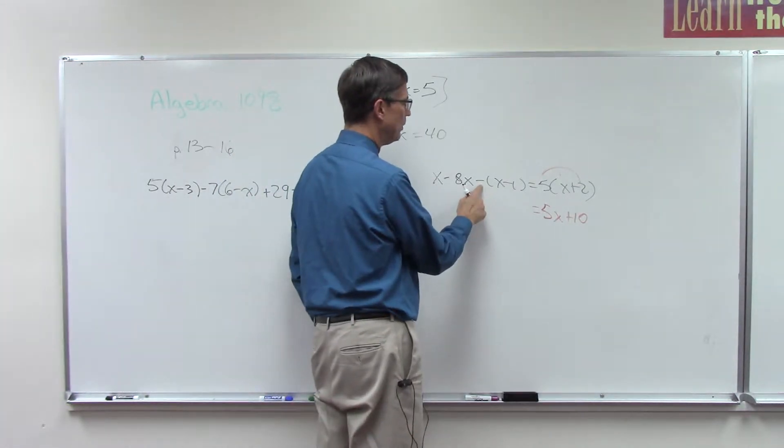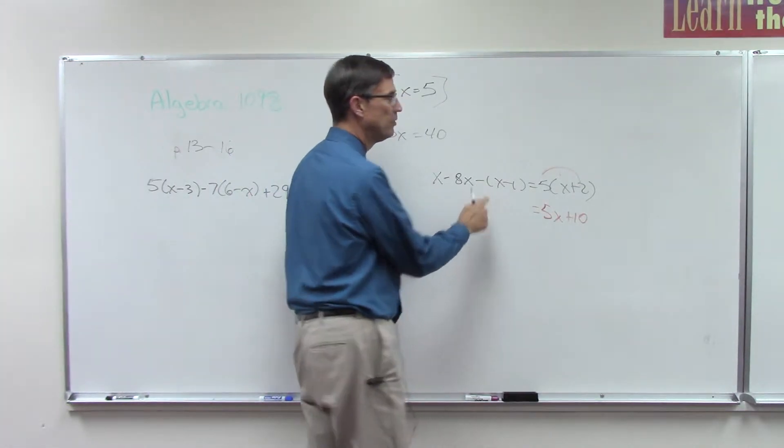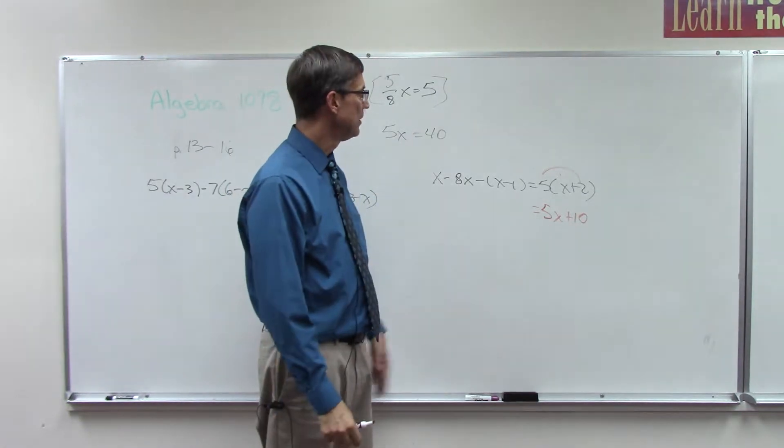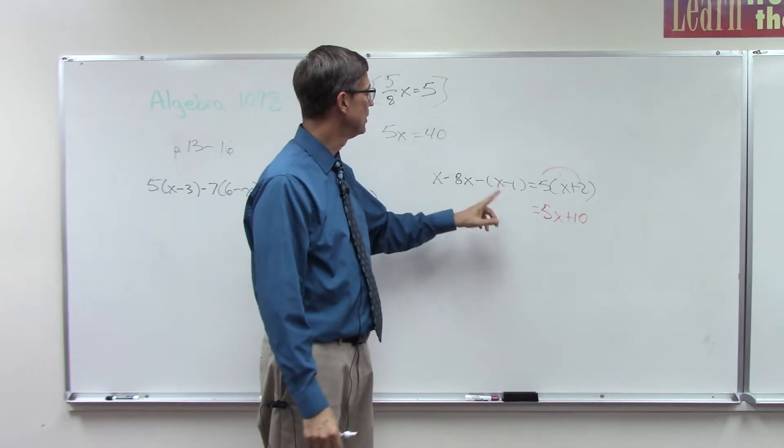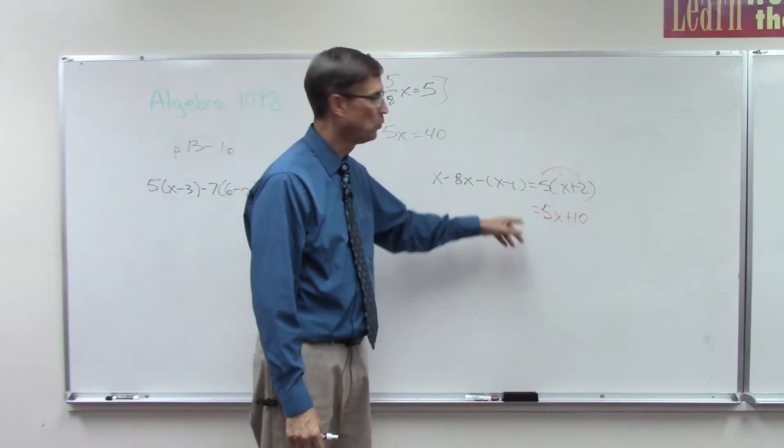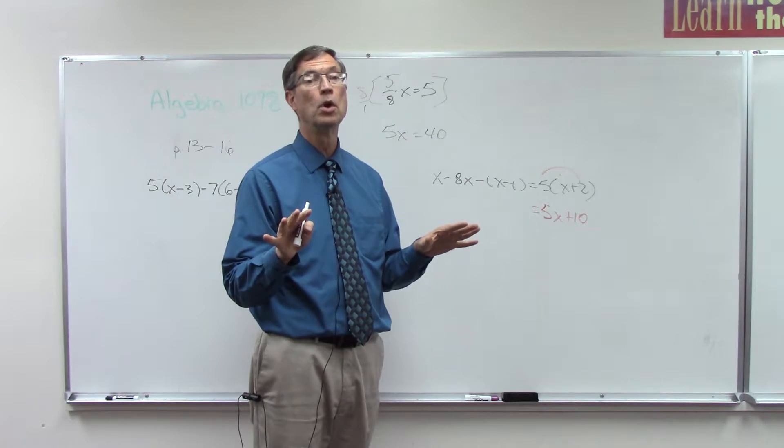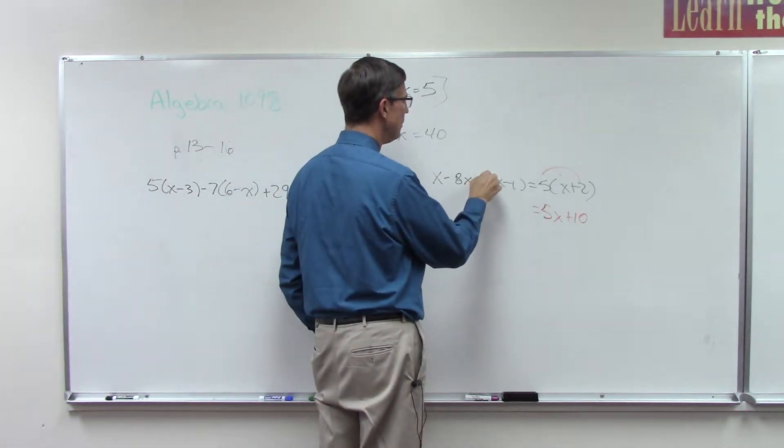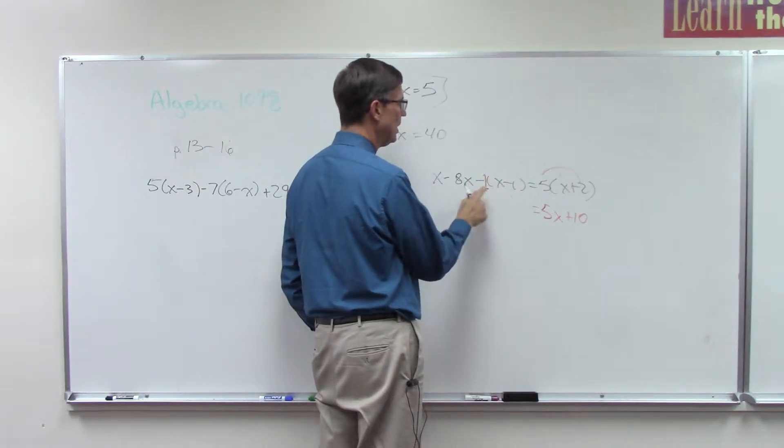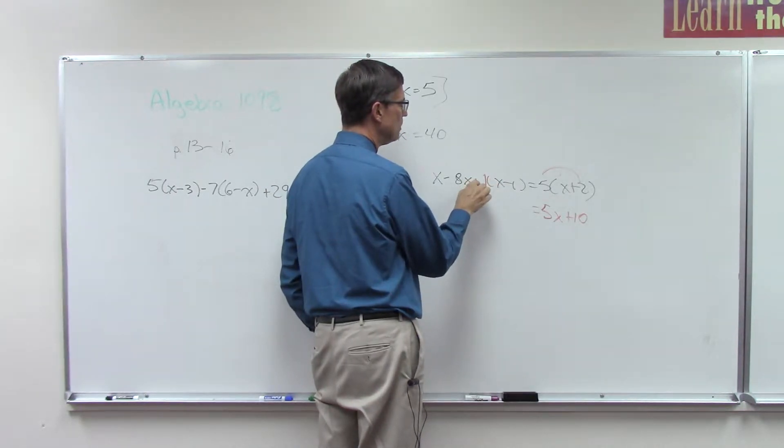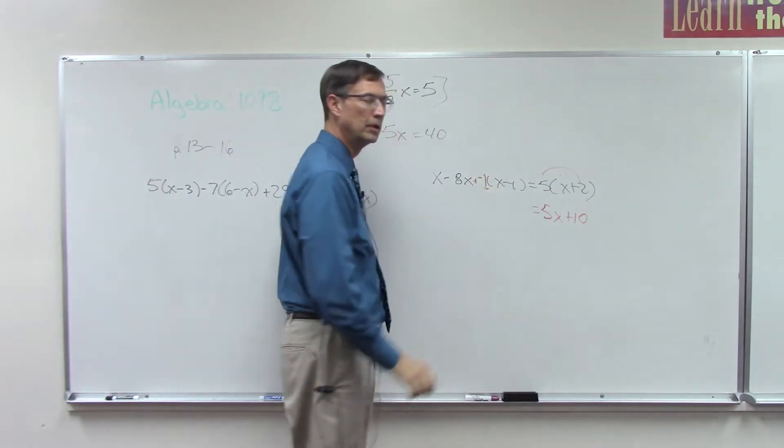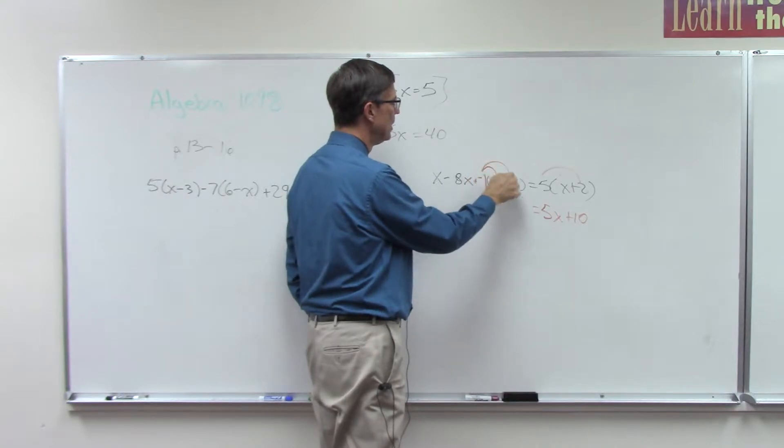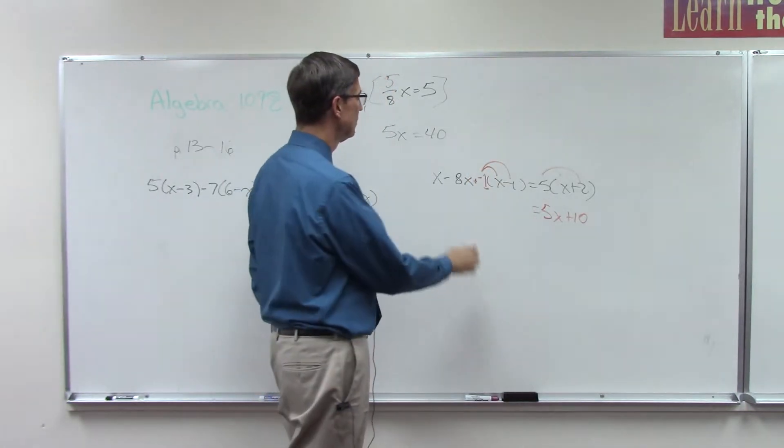Now I have a parentheses here, but we have a problem. We have a negative right in front of that parentheses. And sometimes that throws students for a little bit of a loop, and they think they can just take away the parentheses and have x minus 8x minus x minus 1. You'll get it wrong. So one little step we have to do. I'm going to insert the number 1 in front of this, and then I'm going to change this minus to plus a negative. So what we're actually doing is distributing negative 1 times both of those. Very important.